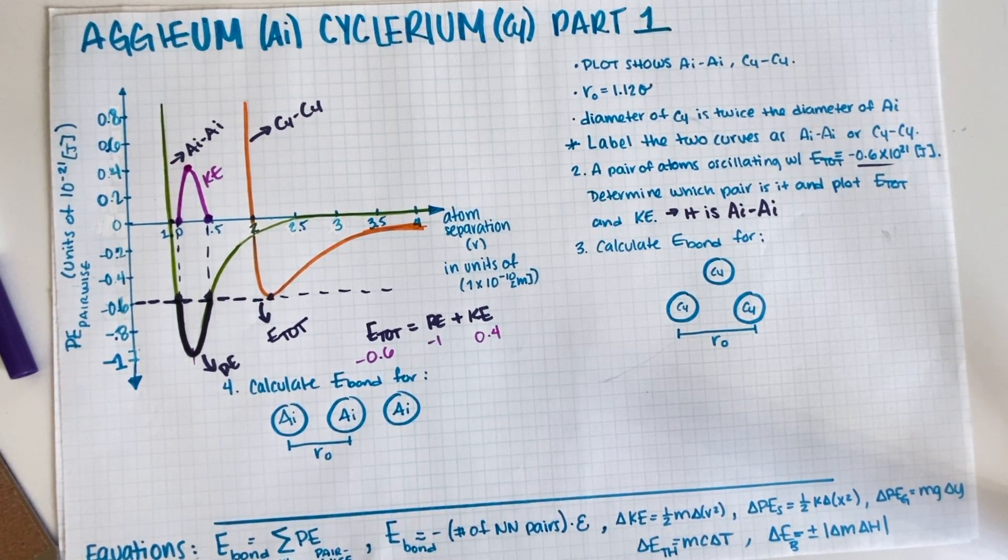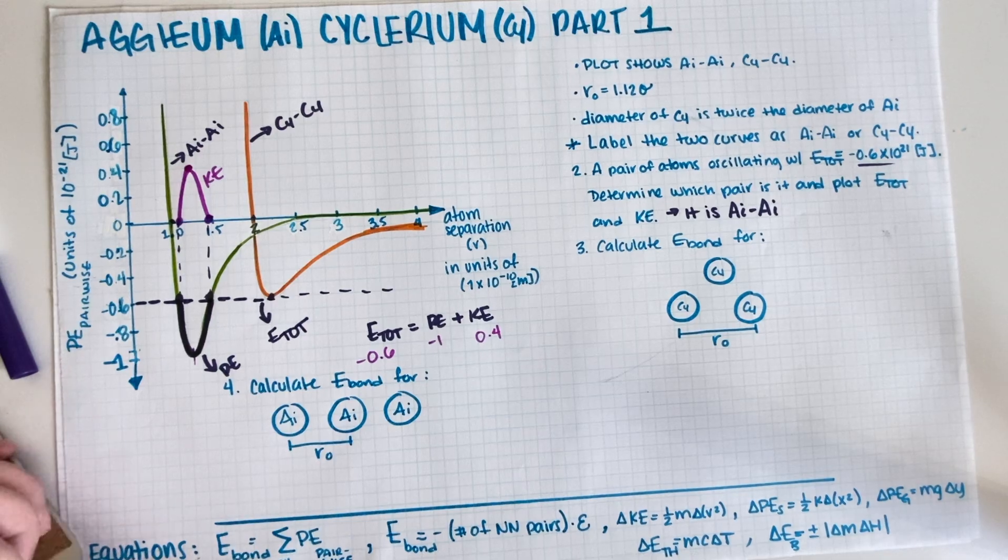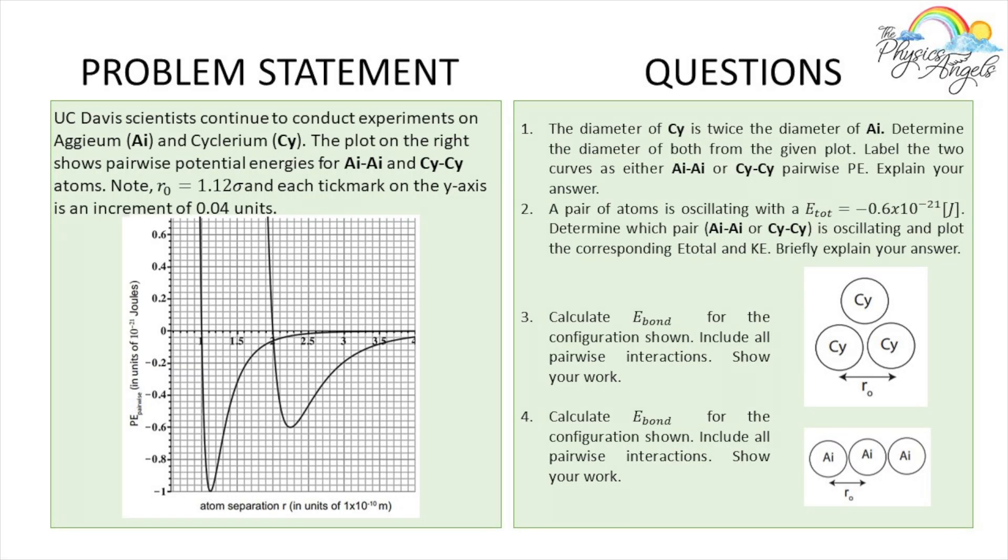Okay, so now let's just go ahead and do parts three and four. For parts three and four we have to calculate E_bond for the configuration - for a Cy-Cy configuration and an Aegeum pair configuration. So let's just go ahead and do it using our equations. It's pretty easy.